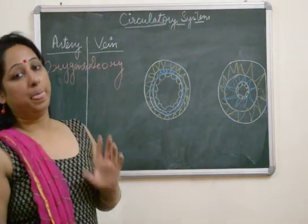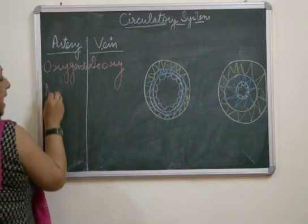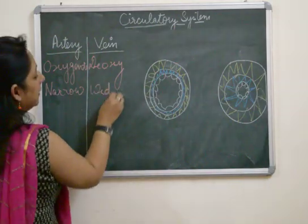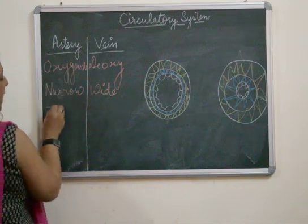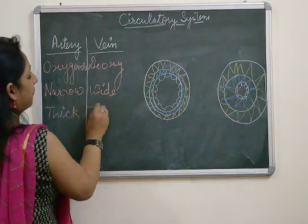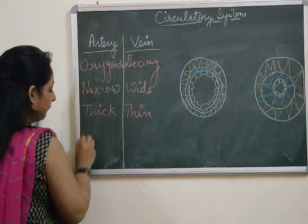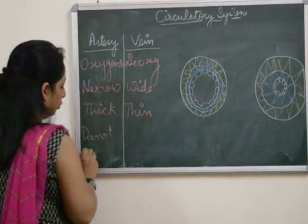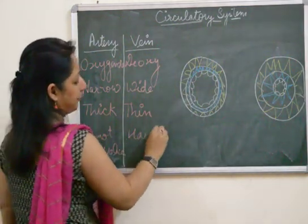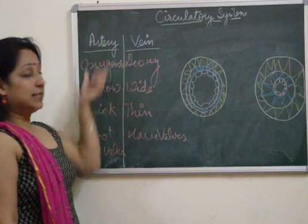Next are the structural differences. Arteries have a very narrow lumen — narrow means small — and veins have a very wide lumen. Arteries have thick walls around the lumen; veins have thin walls around the lumen. Arteries do not have valves, whereas veins have valves. I'll explain all of them once again.